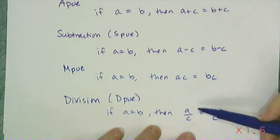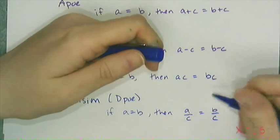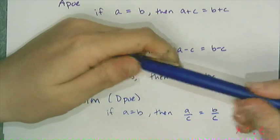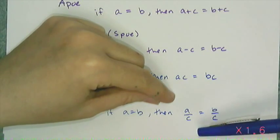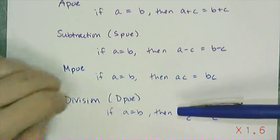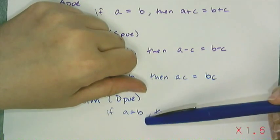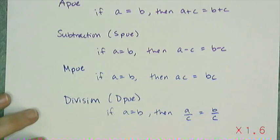And the reason why we write the division with the vinculum as opposed to with the division symbol, the obelisk, is because we need to emphasize that you're dividing the entire side of the equation by the same number. So if you have more than one term on one side of an equation, you have to divide the entire side out. So it's easy just to show that with the vinculum.